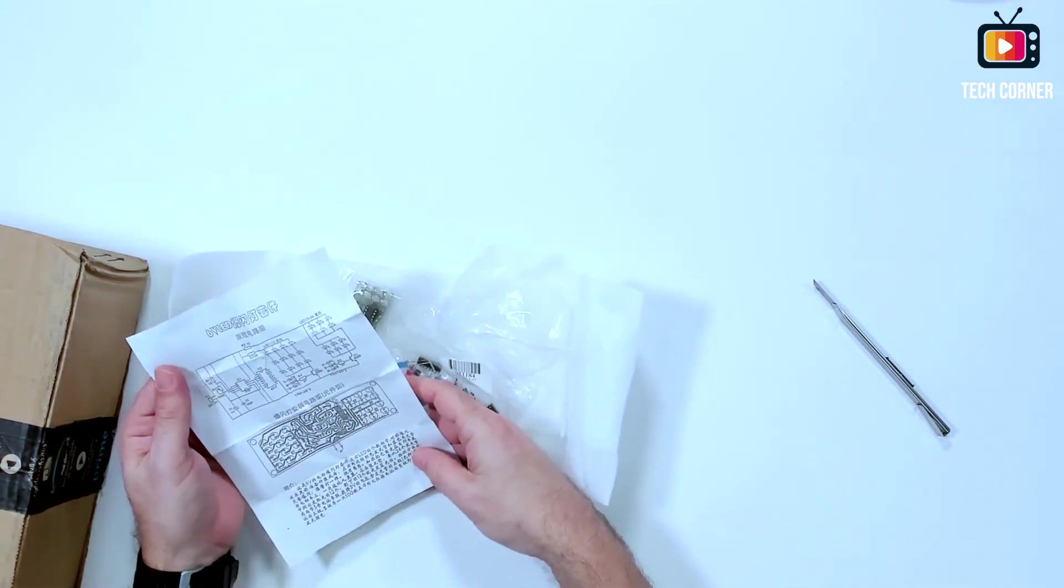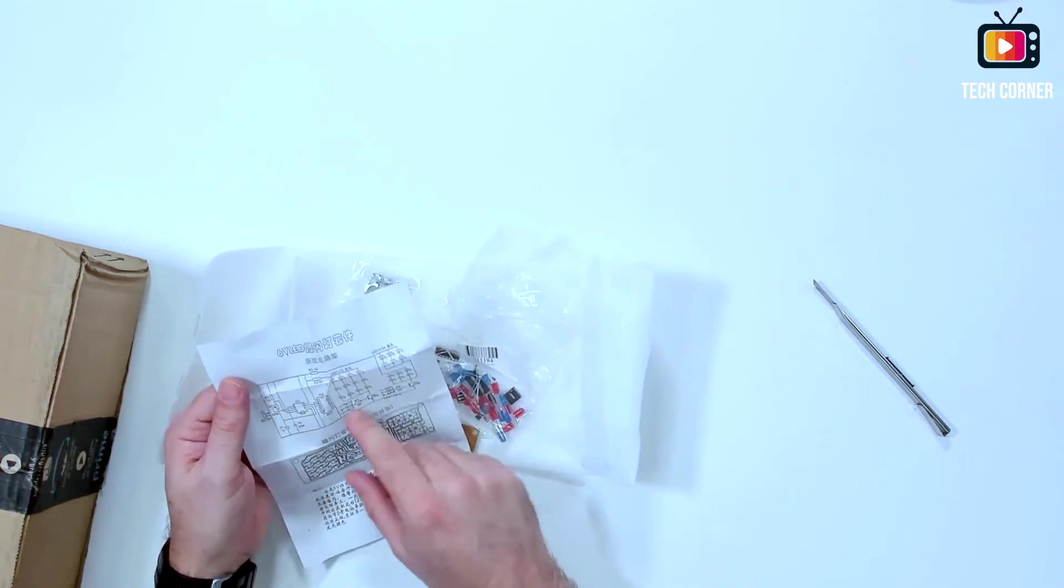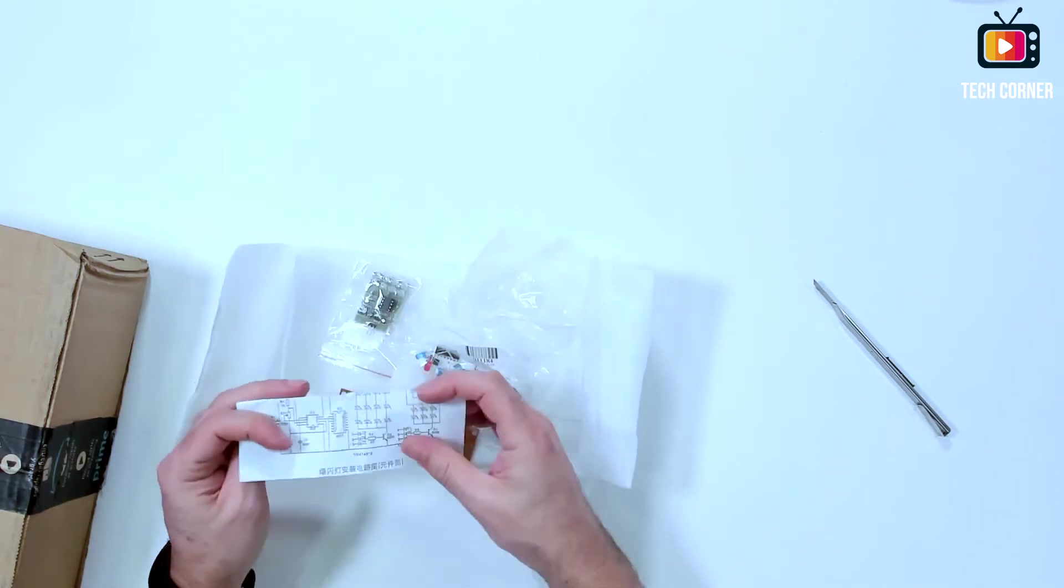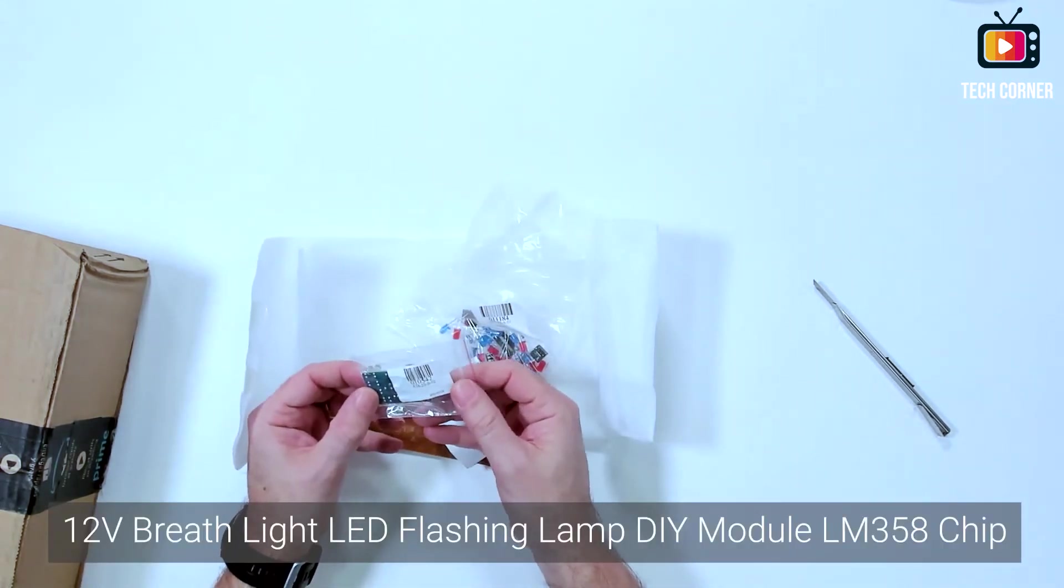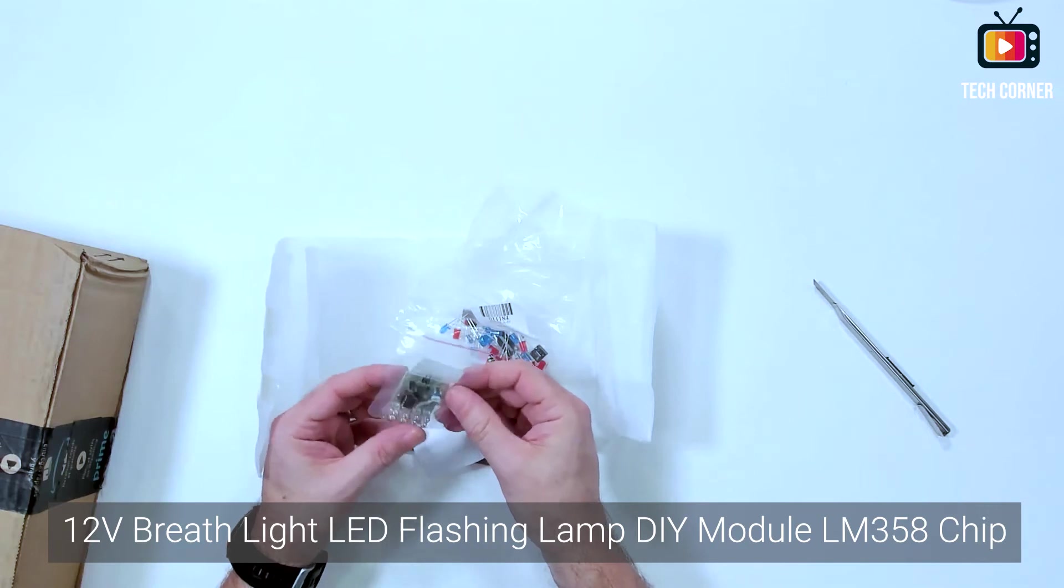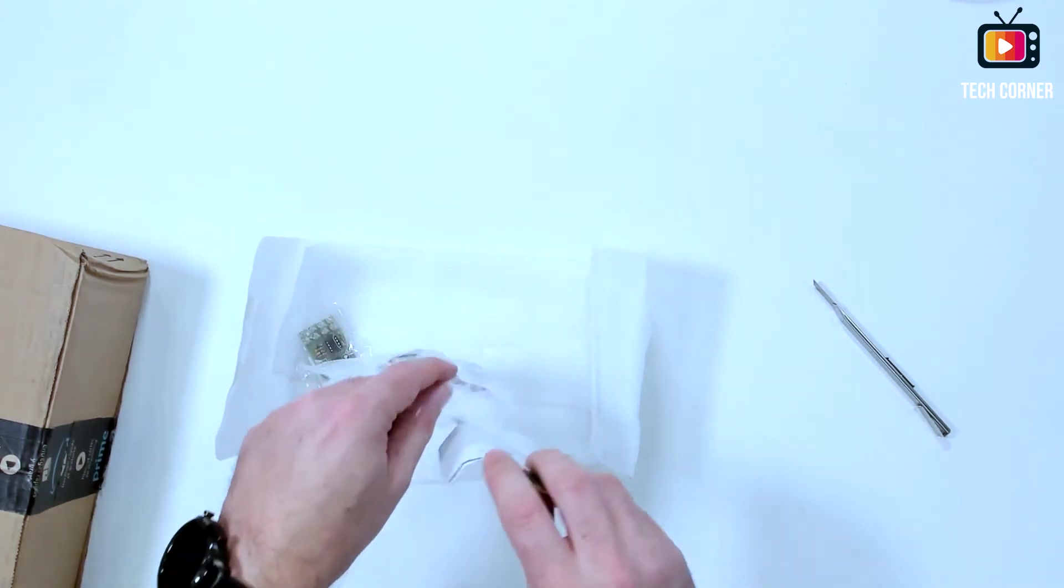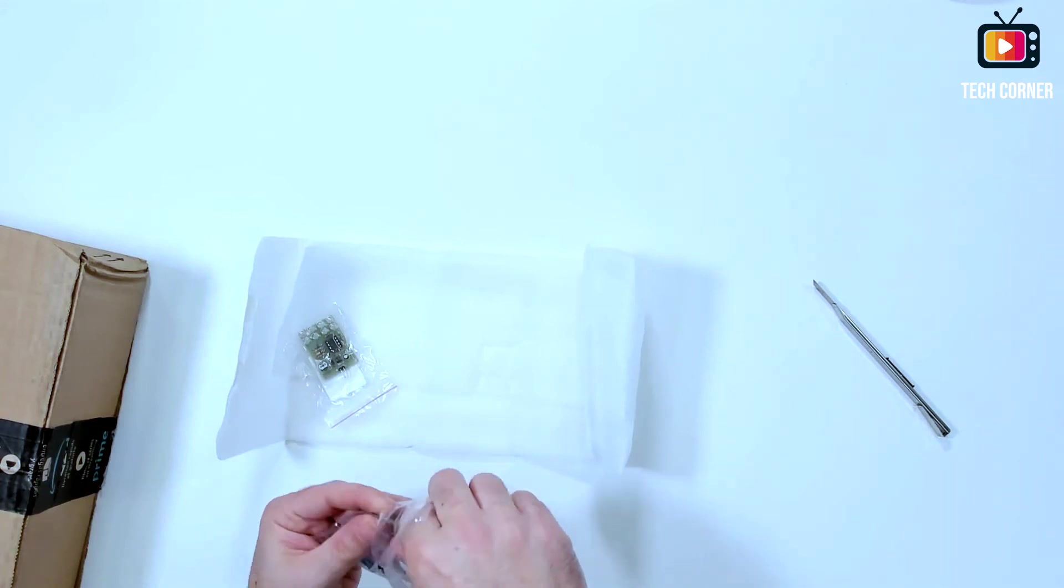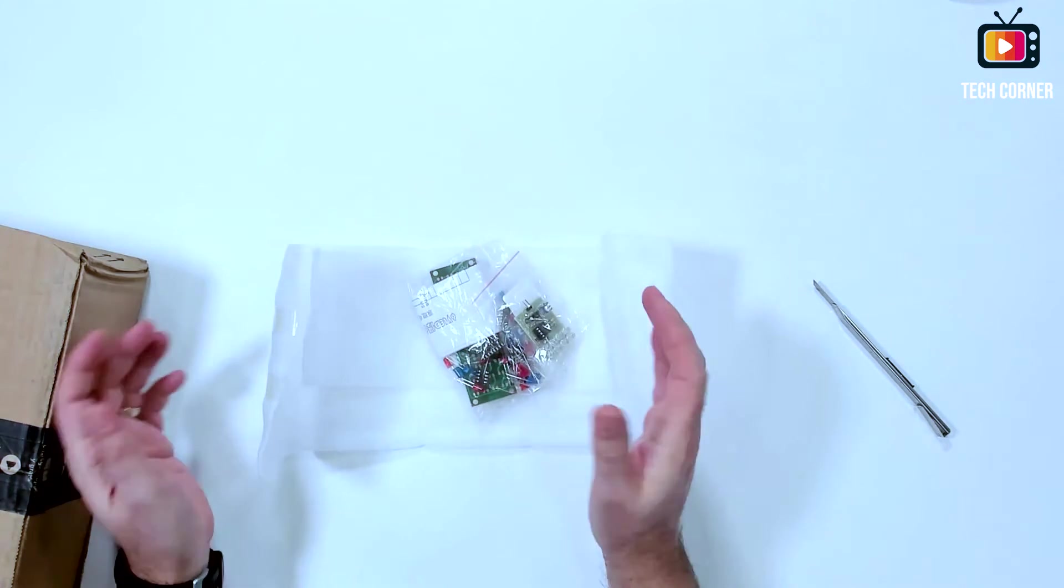And again, as I told you, instructions in Chinese. Oh, at least we have here the electronic scheme. This one, I don't know, I have to see on Aliexpress what is this. And I thought this will come disassembled. So this is another project for Tech Corner Electronics projects and tutorials. And this is, well, I don't know what is this. I have to check.